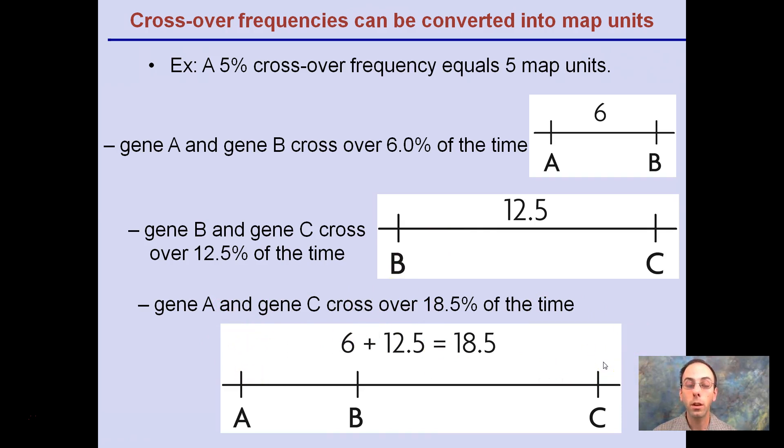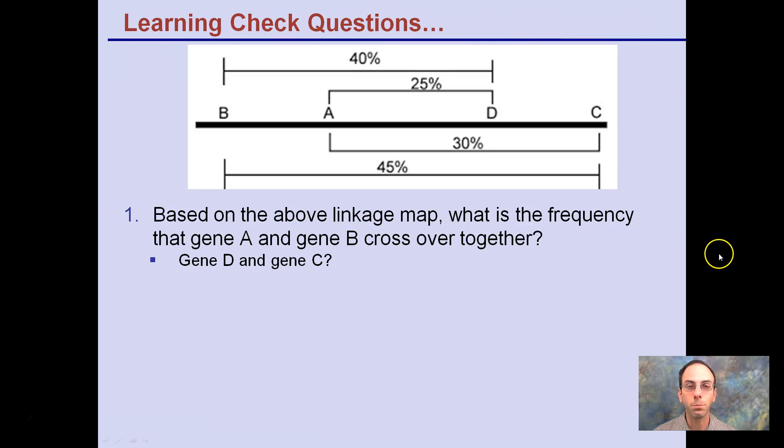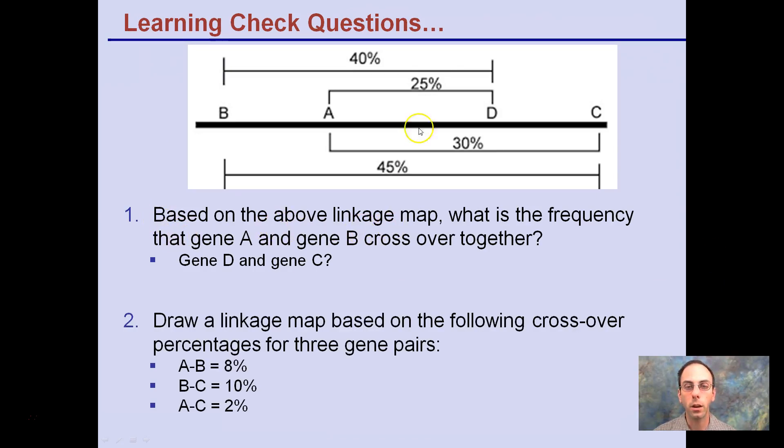It won't always be the case, but hopefully you can follow and understand how we got to the order and the distance between these. Once you get the hang of it, it's actually pretty easy. So let's check here. Based on the above linkage map, what's the frequency of Gene A and Gene B crossing over together, or Gene D and Gene C? Could also draw a linkage map based on the following crossover percentages for the three gene pairs: A and B is 8%, B and C is 10%, A and C is 2%. What would that physically look like?